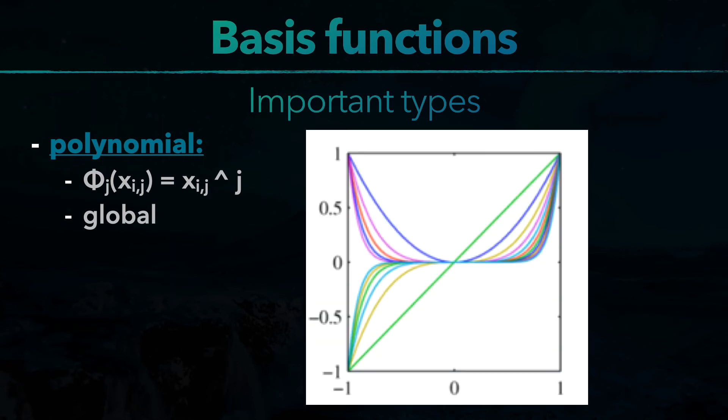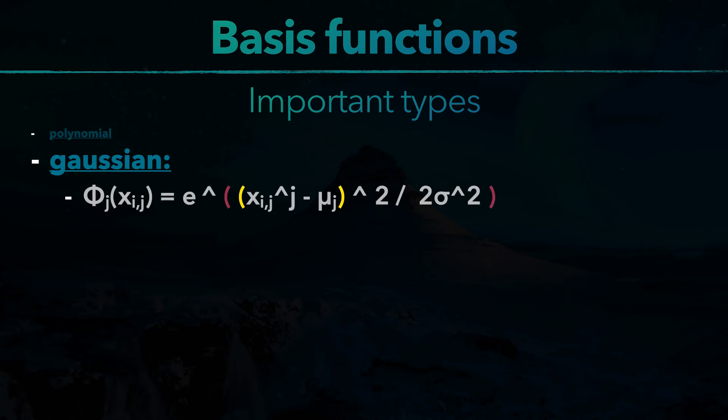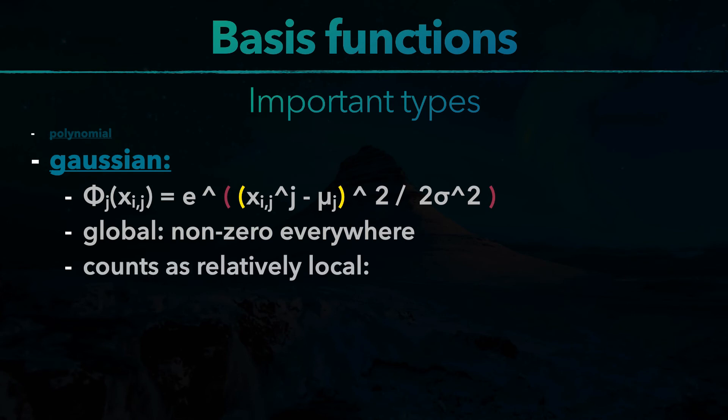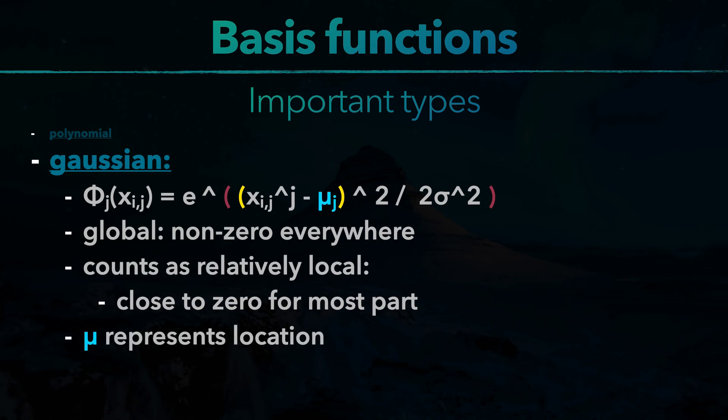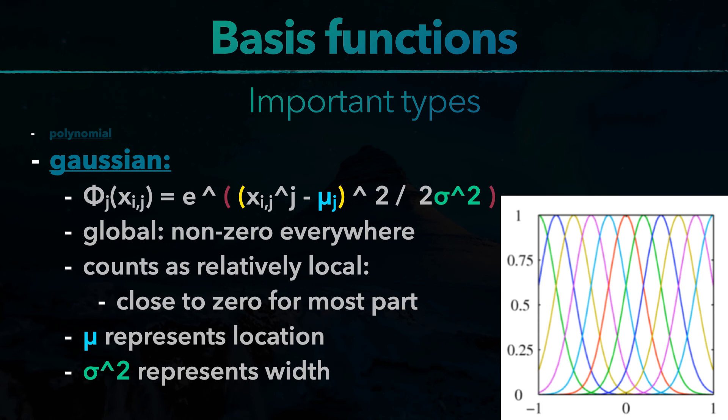Secondly, there are Gaussian basis functions. They have this form. I won't read it out loud, because I would die trying to say it error free. But they are global, as in they are non-zero everywhere. But they count as relatively local, because they assign values that are close to zero for the most parts. These functions are easy to use, because mu represents the location and sigma to the power of 2 represents the widths of the Gaussian. They look like this.